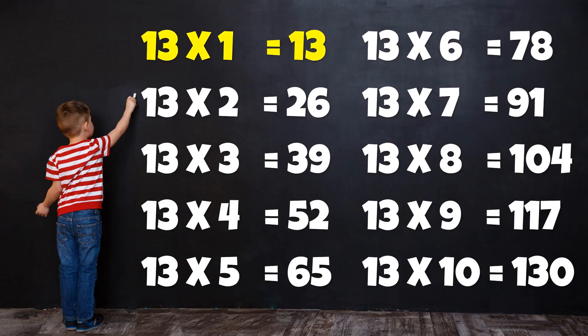Table of 13: 13×1=13, 13×2=26, 13×3=39, 13×4=52, 13×5=65, 13×6=78, 13×7=91, 13×8=104, 13×9=117, 13×10=130.